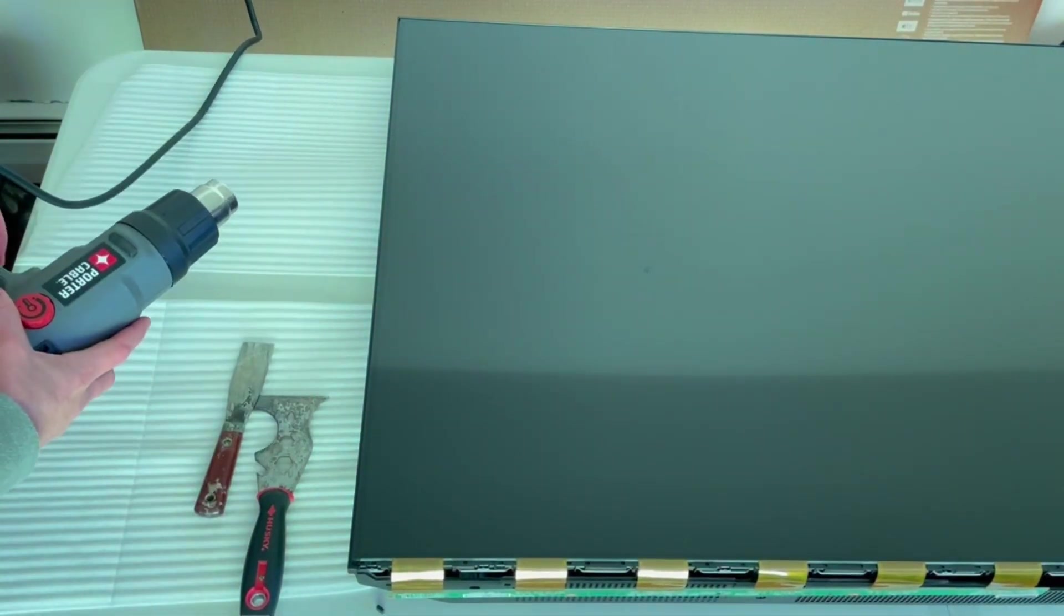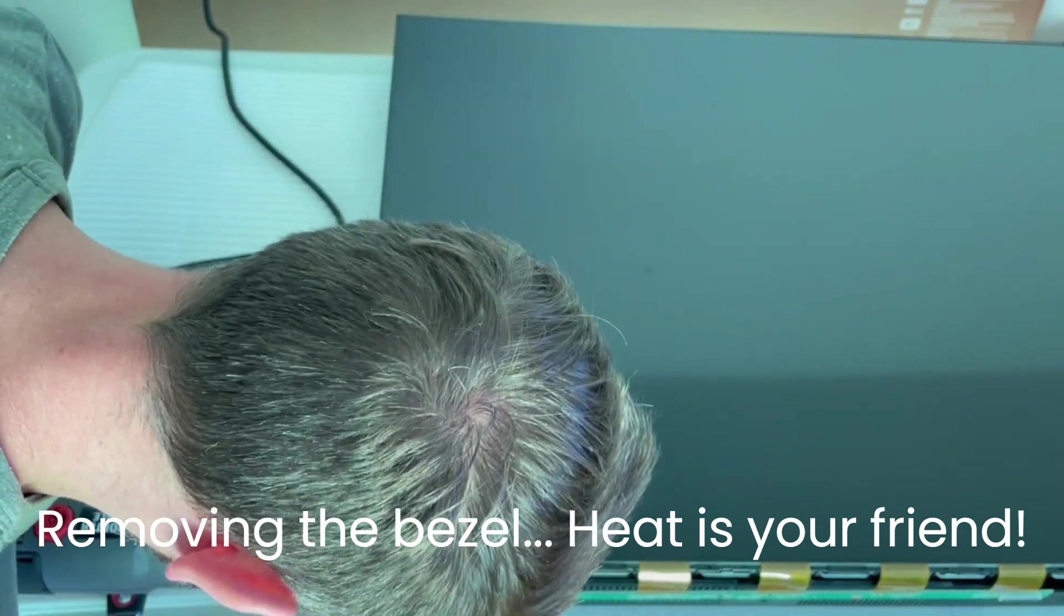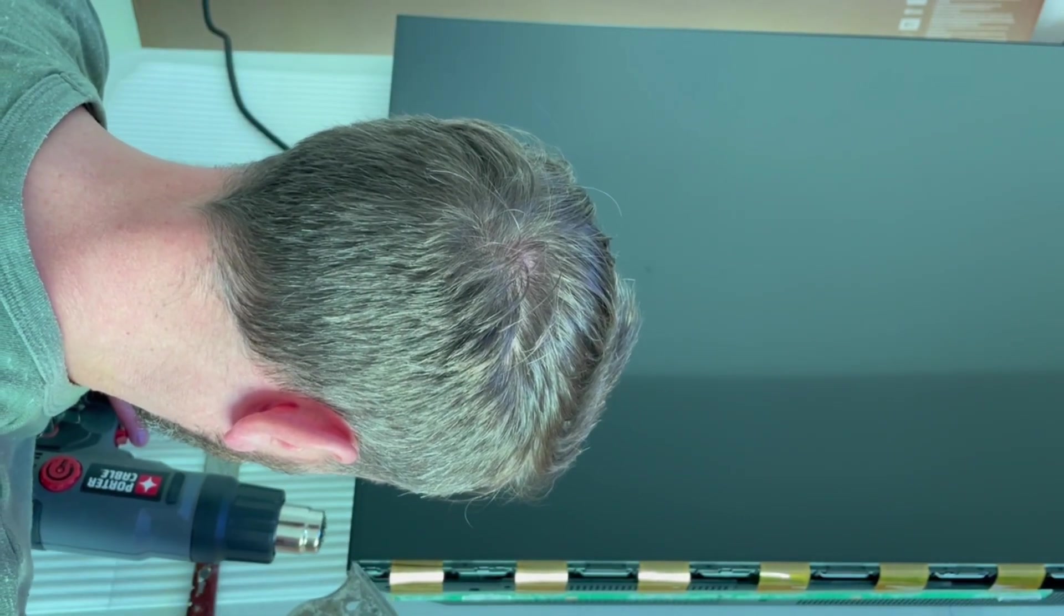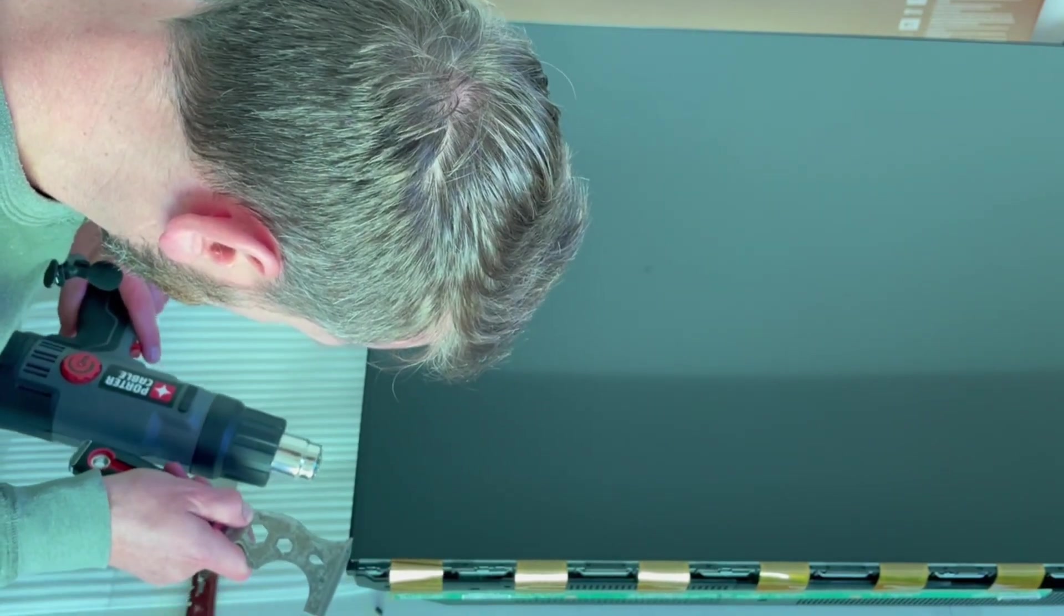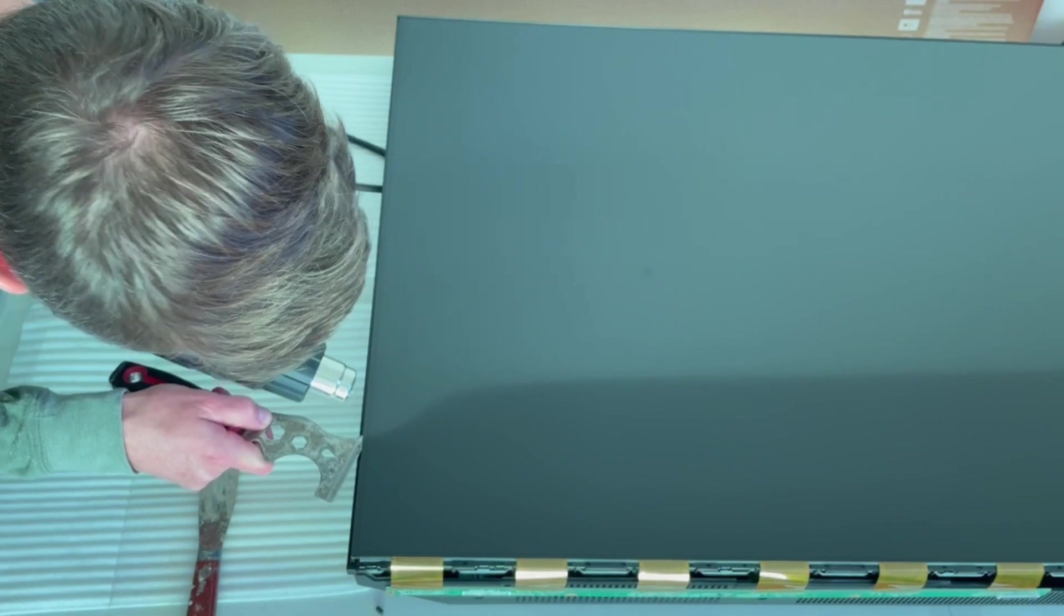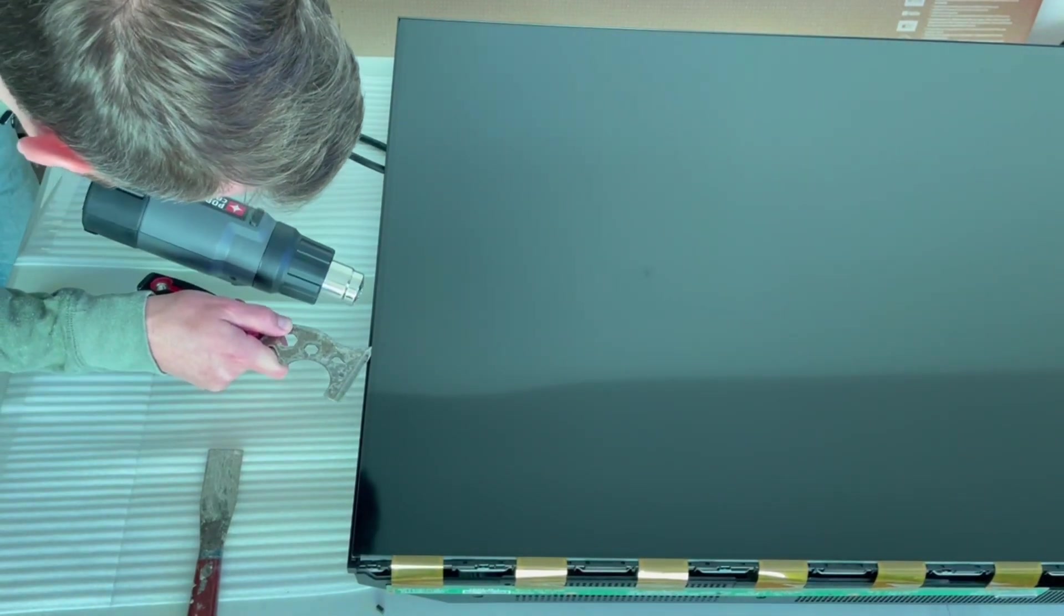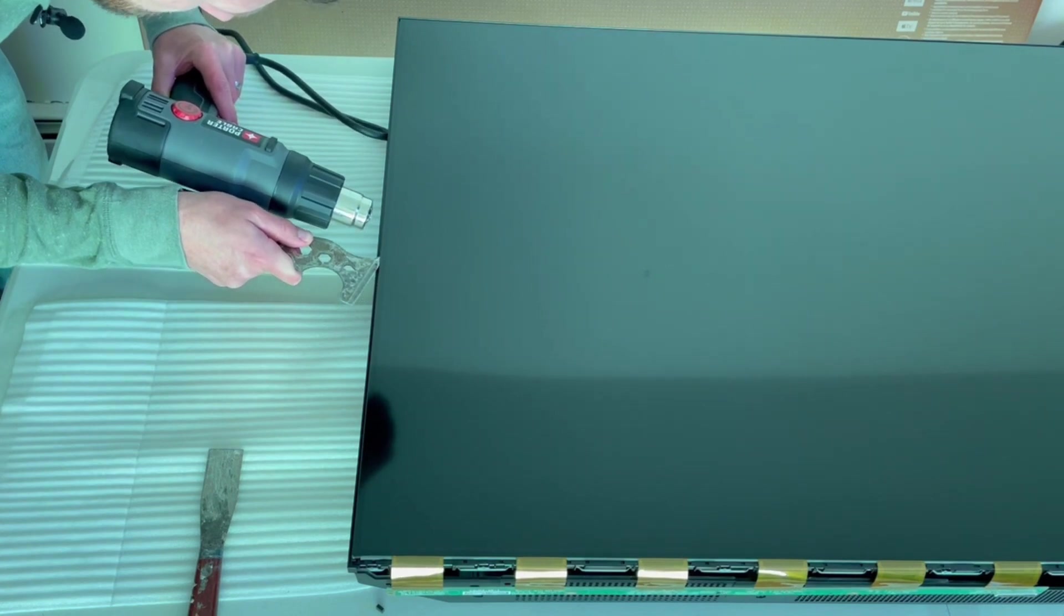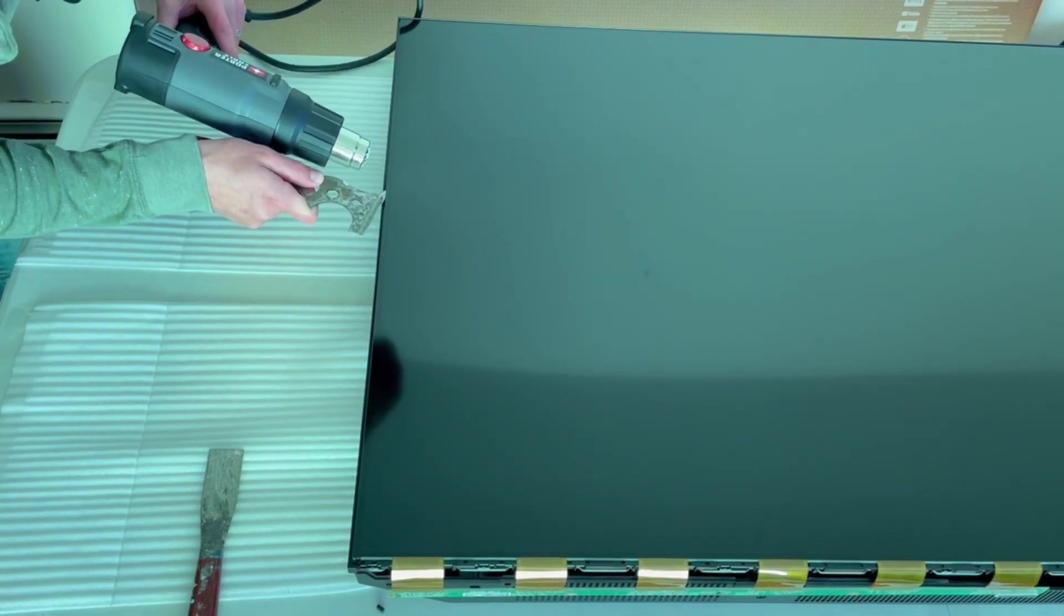Okay, so now we're going to see if we can start to warm up the adhesive here. And work the bezel loose. I'd love to be able to do this without damaging the LCD if I can. We shall see if that's possible. Looks like we're under it. I'm going to go very slowly working my way around here. The heat is definitely loosening up that adhesive. I hope it doesn't stick back behind me again. If it does, I'll stick something in between it.